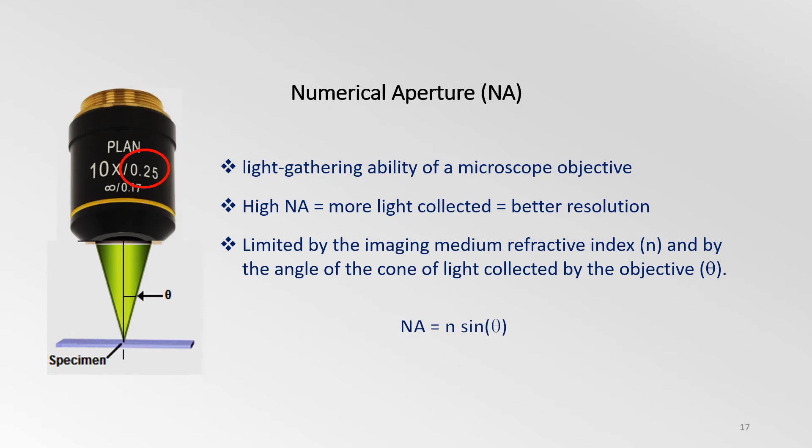As I mentioned earlier, the numerical aperture characterizes the range of angles over which the objective can accept or emit light. The light-gathering capacity of an objective directly influences its ability to resolve fine specimen detail. NA is given by the simple expression N sin theta. N represents the refractive index of the medium between the objective front lens and the specimen, and theta is one half of the angle of light collected by the objective.